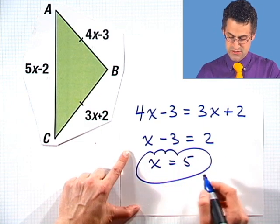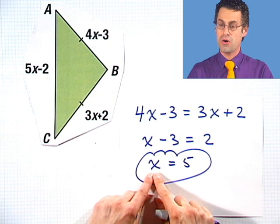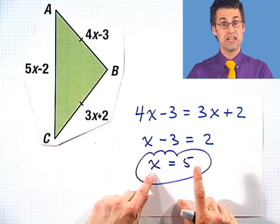So there I see x equals 5, and you might say, great, we have the answer, we're done, we can go outside and play. No. We were asked to find the length of each side. All I figured out was the unknown mysterious x. It equals 5.